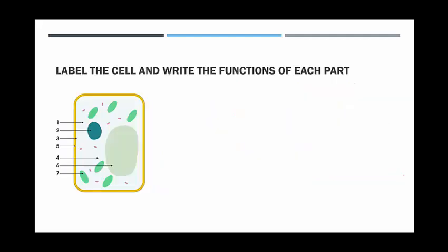Similarly, this is a plant cell. Again, I'd like you to label and write the functions of each part. If we've already written the function down for the animal cell because they're the same part, then just leave that and write down the functions for the other bits.